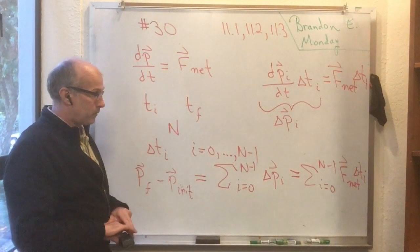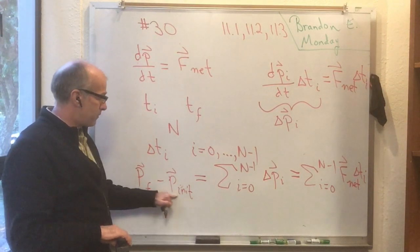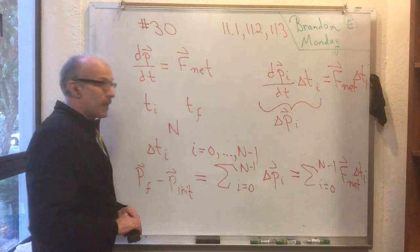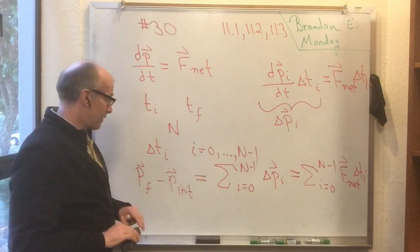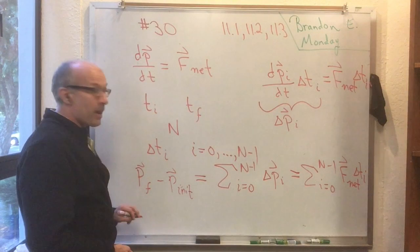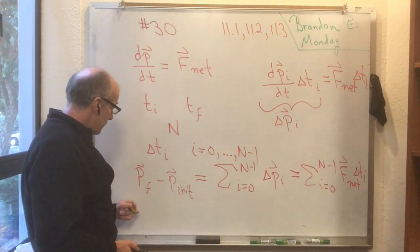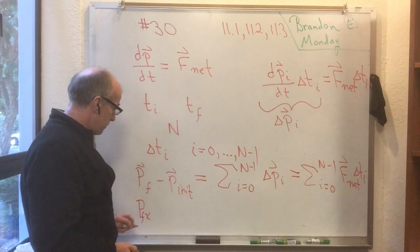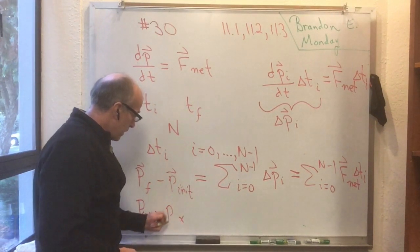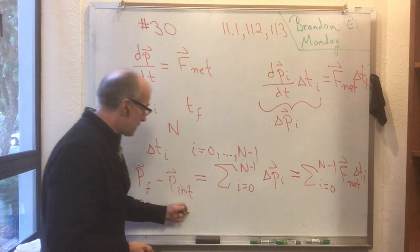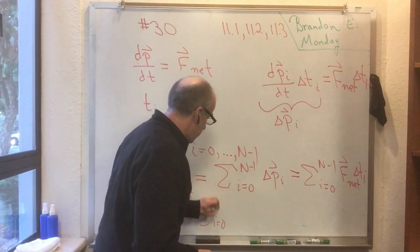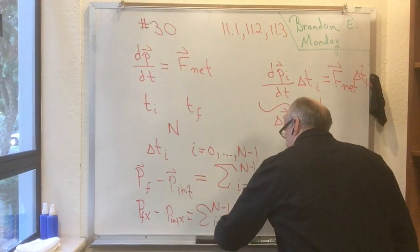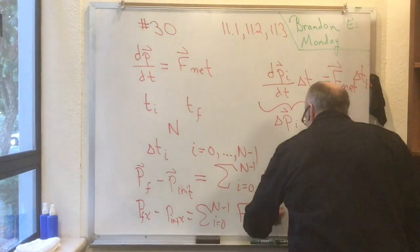Now this is a vector equation. On the left-hand side, I've got the difference of two momentum vectors. On the right-hand side, I have a sum of a bunch of vectors. Let's, to make your life a little easier, take one of the components of this equation. So you can visualize it a little better. How about I take the x component of this equation. Then this says, the x component of p_final minus the x component of p_initial is equal to the sum i equals 0 to n minus 1 of the x component of F_net times delta t sub i.